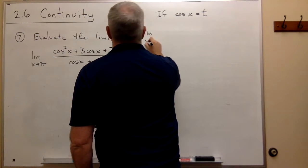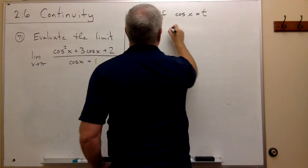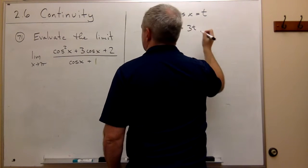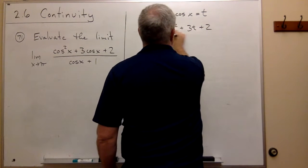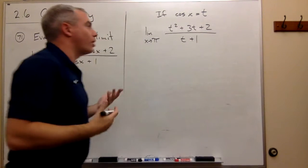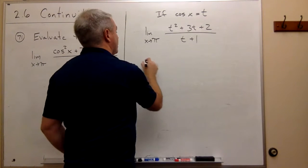Then we get the limit as x goes to pi of t squared plus 3t plus 2 divided by t plus 1. And now we're back to a problem that we're very comfortable with and that we've done lots of times.